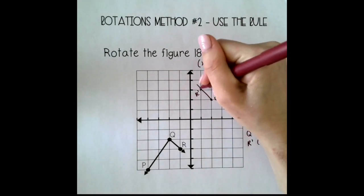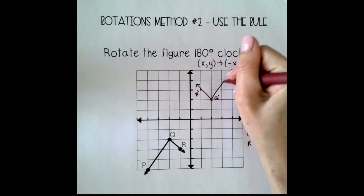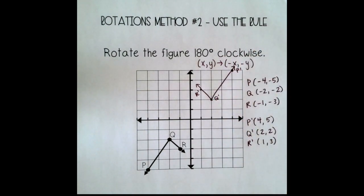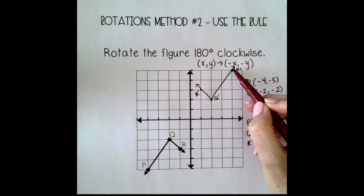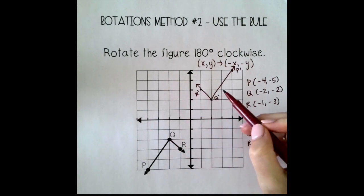And then connect them. And you have your image. Make sure when you are drawing your image that it looks like your pre-image. So I don't want to connect these and make a triangle because I started with an angle. I want to end with an angle.